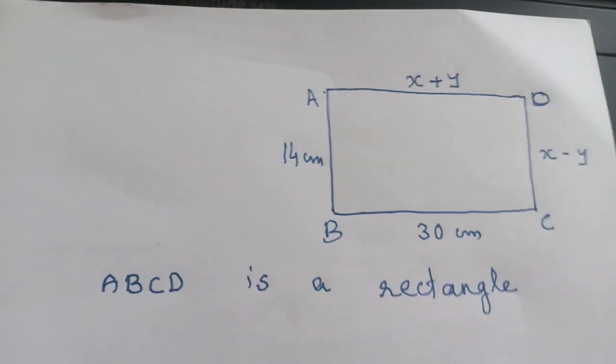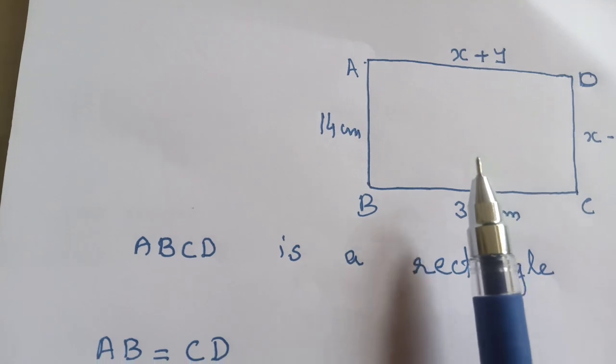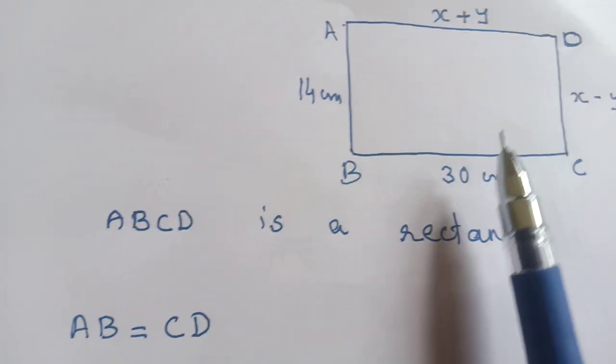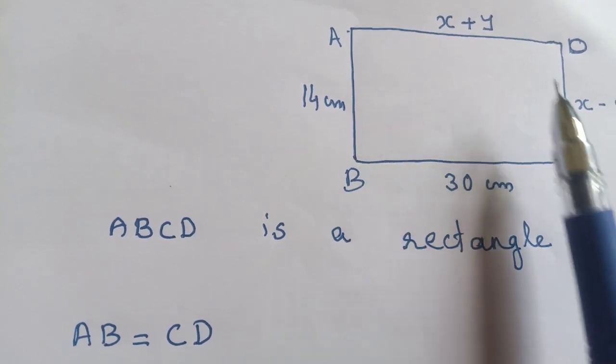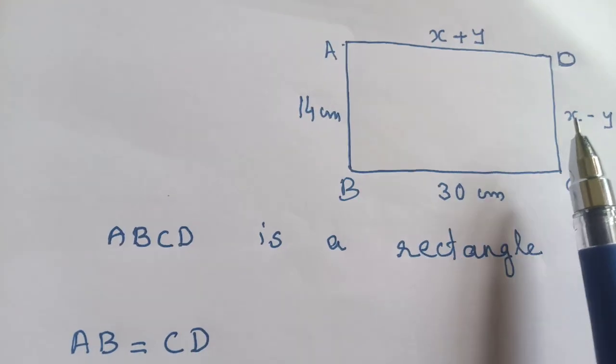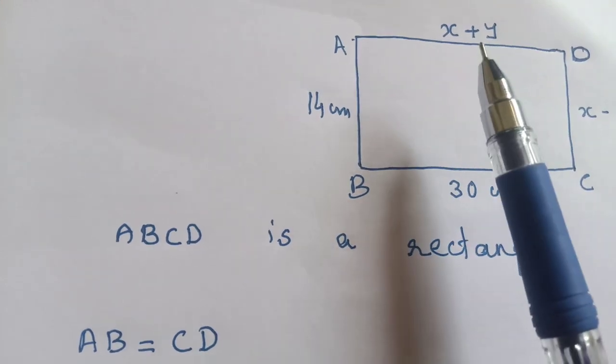We have a rectangle ABCD where we need to find the values of x and y. This is the rectangle ABCD, and x and y are measurements that we have to find.